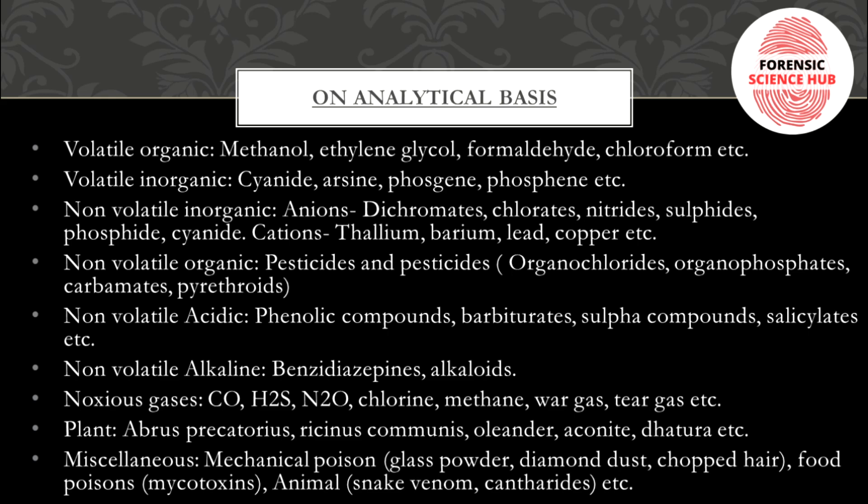Noxious gases include carbon monoxide, hydrogen sulfide, methane, chlorine, tear gas, water gas, etc. Plants are also a common source of poison, including Abrus precatorius, Ricinus communis, oleander, aconite, datura, etc. Miscellaneous again includes mechanical poisons like glass powder and diamond dust, food poisons including mycotoxins from fungi, and animal sources like snake venom and cantharides.